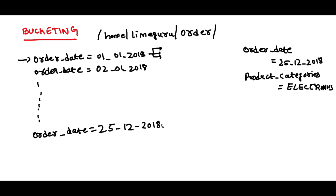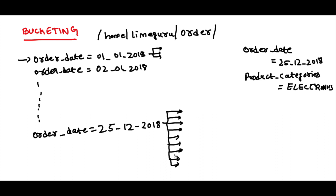When you query for 25th December with product category as electronics, Hive goes to that partition subdirectory and scans the entire partition to find orders with product_category = 'electronics'. Since the data size is huge on that date, this scan is slow. The bucketing concept can make this faster by further organizing the data inside each partition.